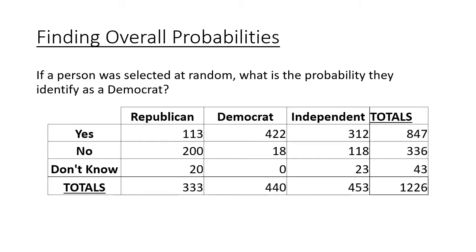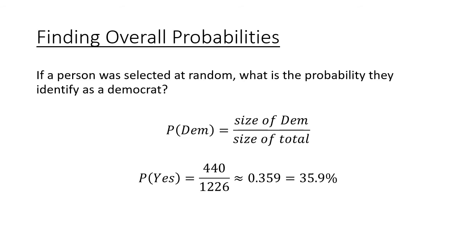Next question: if a person is selected at random, what is the probability that they identify as a Democrat? Again, we're looking at just a random person regardless of how they answered the question. The total number of Democrats was 440, out of the same 1226 total. So 440 divided by 1226 gives a probability of 0.359, or approximately 35.9% of people identified as a Democrat.